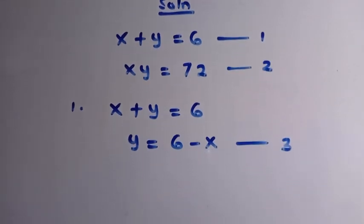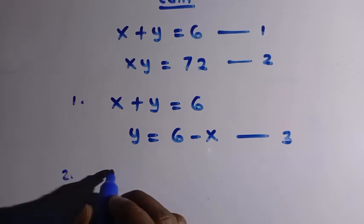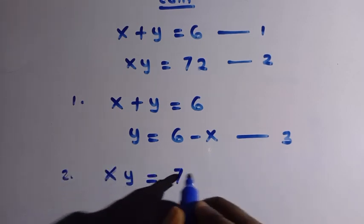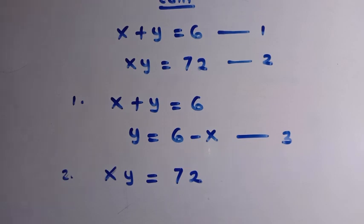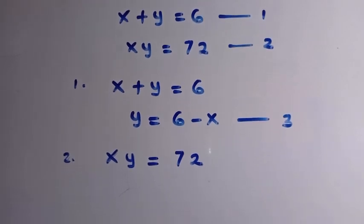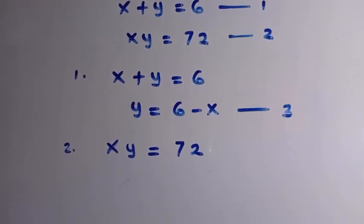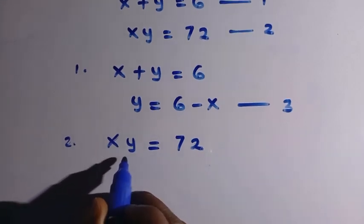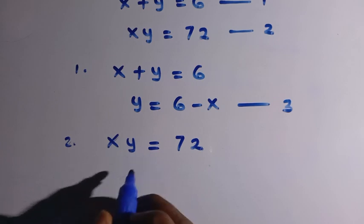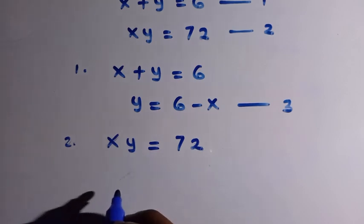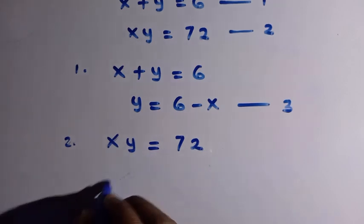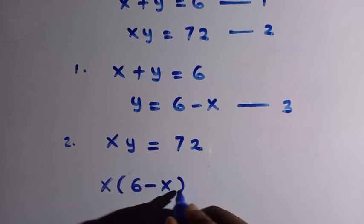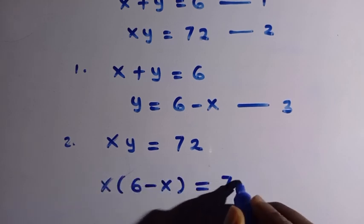We recall from equation 2, which says xy equals 72. We have already made equation 3, which is y equals 6 minus x. It means we have to substitute into equation 2 — wherever we see y, we replace it with 6 minus x. So we have x times bracket of (6 minus x) equals 72.